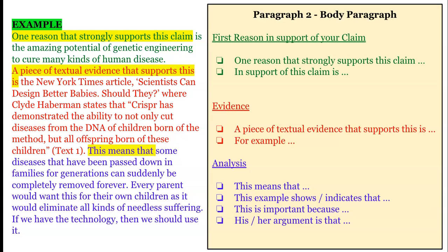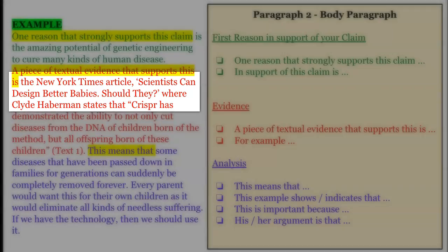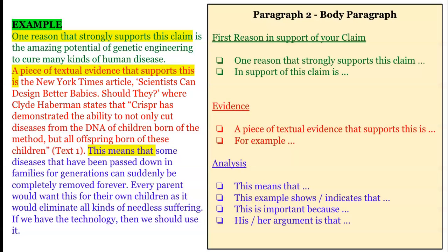Next you need to give evidence to support your reason. So as in the example here, if you're talking about curing diseases, you should choose a relevant quote from a text. Start by saying something like 'a piece of textual evidence that supports this is' or 'for example,' and then you have to make sure you are quoting the evidence properly. So you start with the source — the New York Times article — and then say what the title of that article is and maybe the author as well.